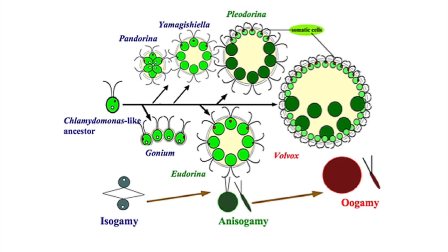Volvox evolved from Chlamydomonas in order to develop multicellularity, perhaps through minor modifications of the genetic map of Chlamydomonas over time from evolution. Characterized by a developmental complexity as evolution took place while retaining traits of the Chlamydomonas ancestors, Volvox provided a piece of evidence as part of the transition to multicellularity.